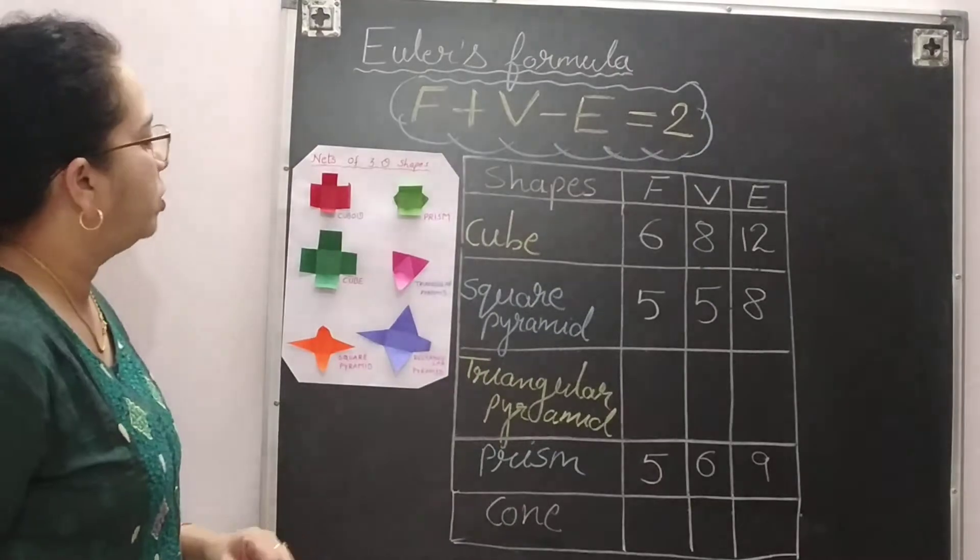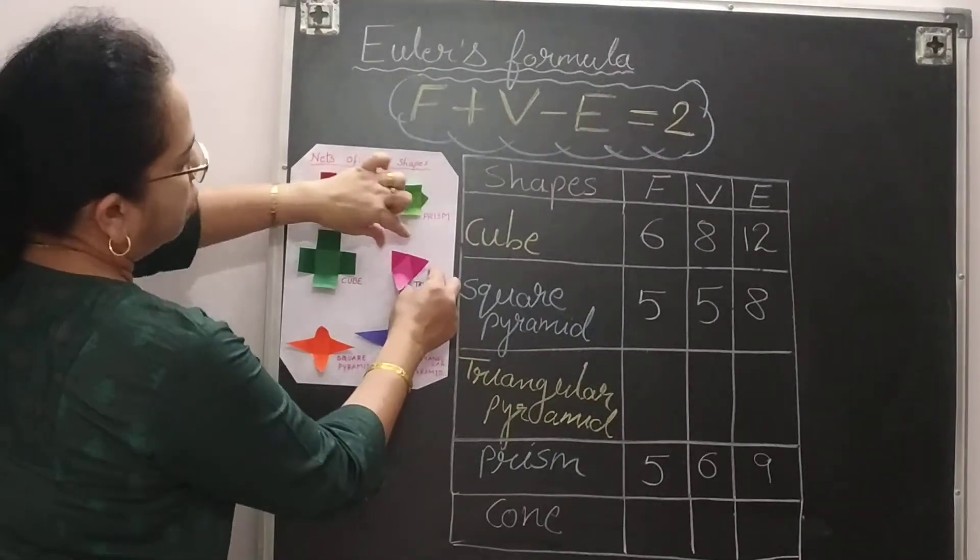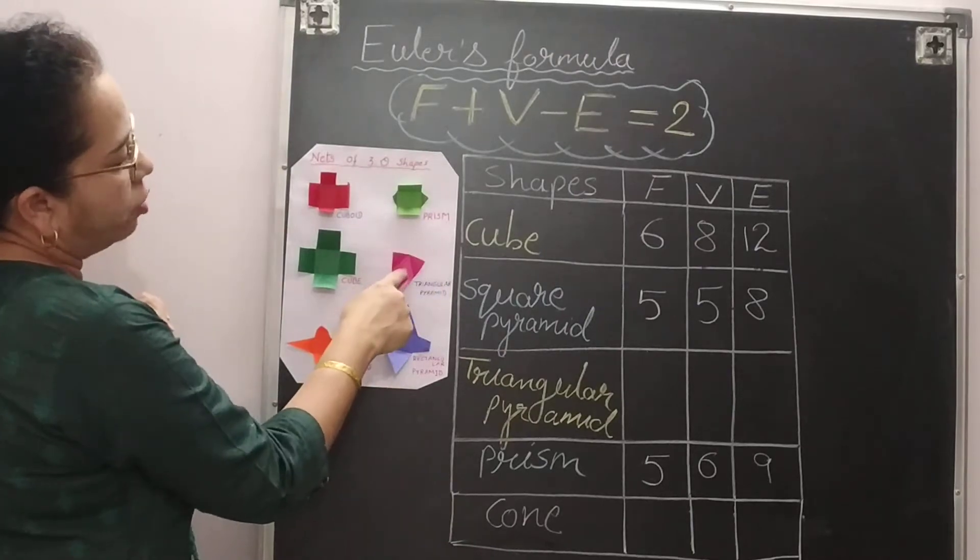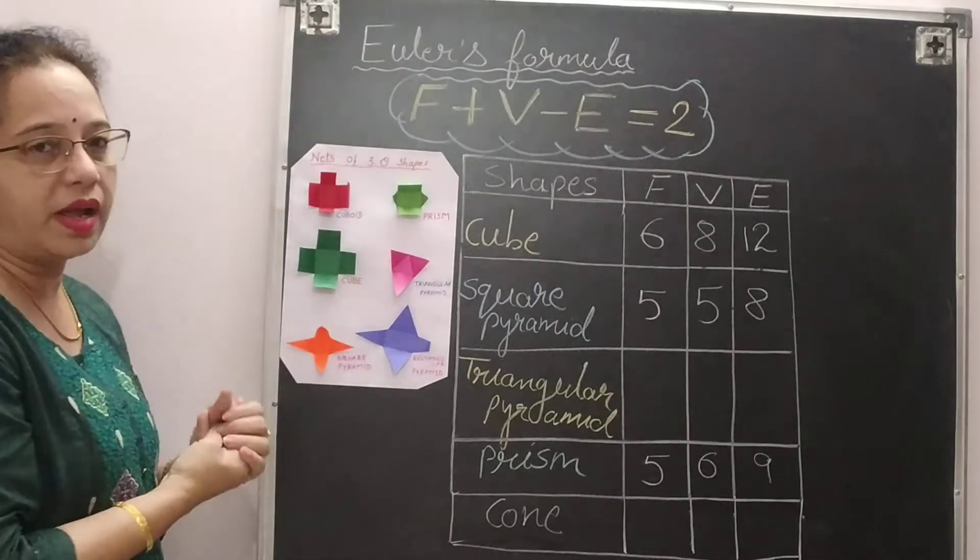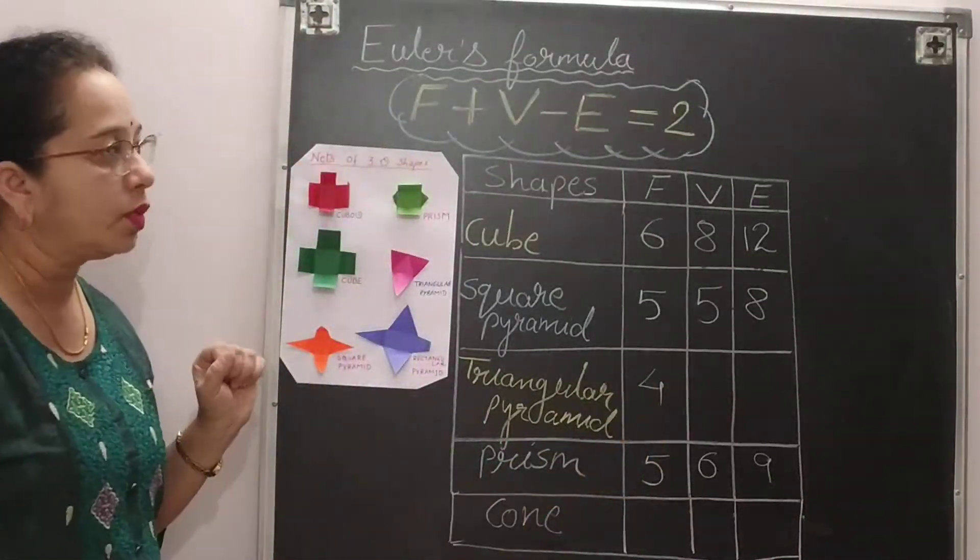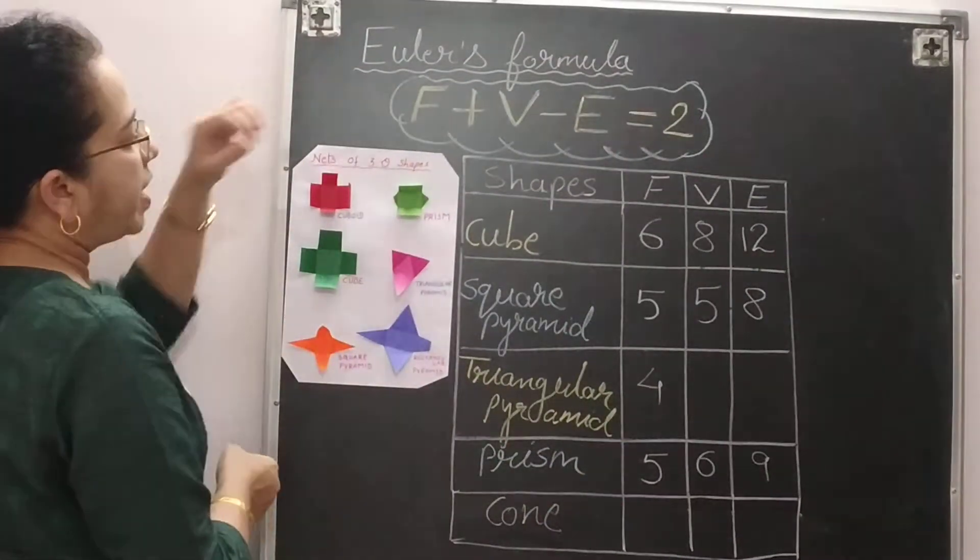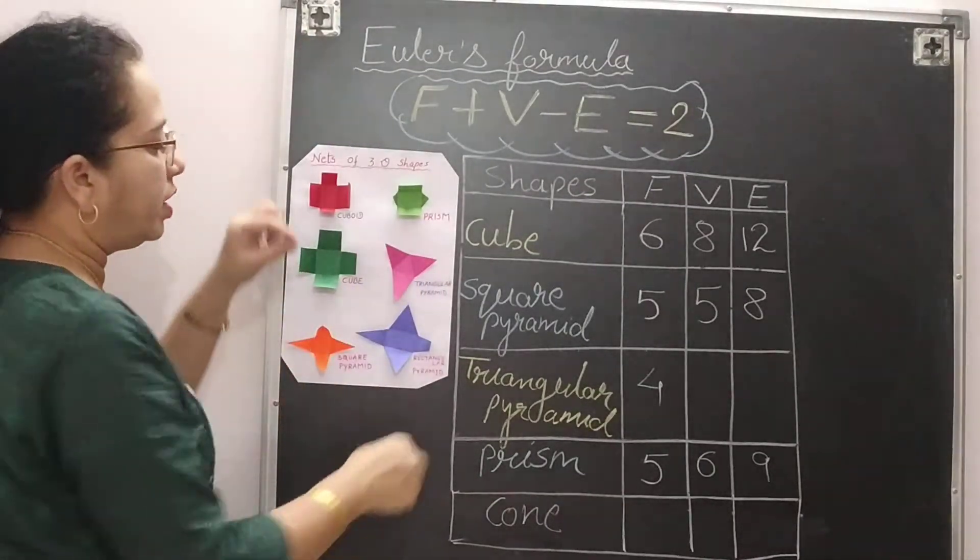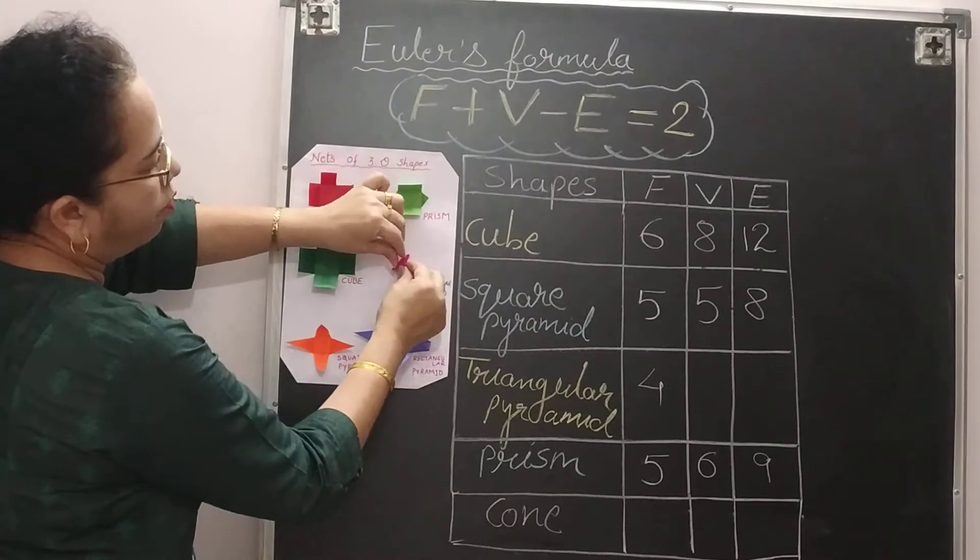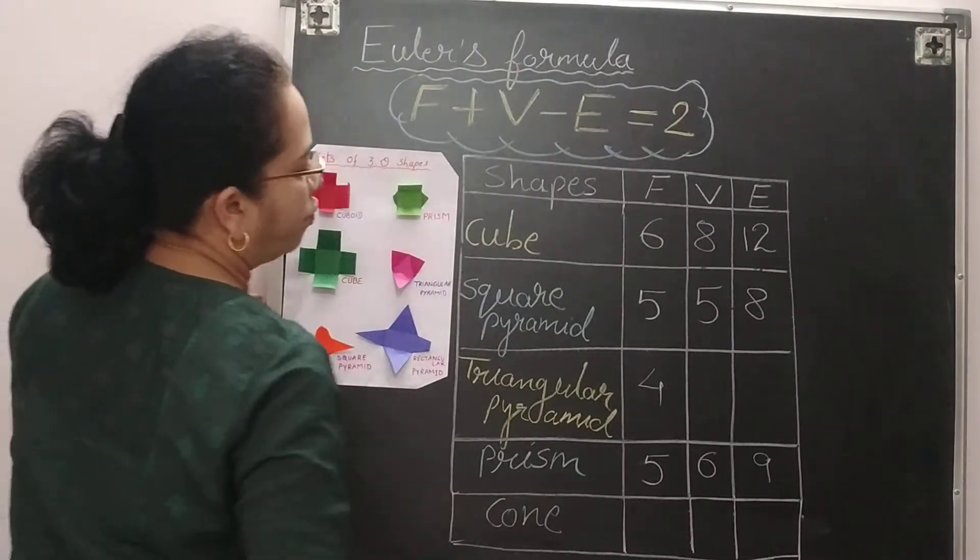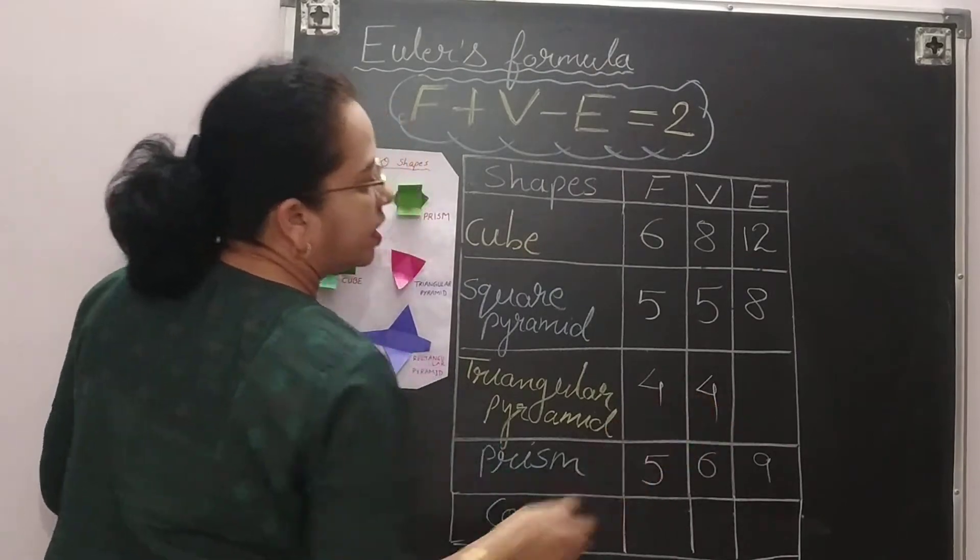Now come for the triangular pyramid. This is your triangular pyramid. So triangular pyramid, your base is triangle and these 3 are also triangle. So total number of faces are 4. Now we will find out vertices. How many vertices are there? So in a triangle you will get 3 vertices and this top one, this point will give you 1. So 3 plus 1, 4. So we have 4 vertices.